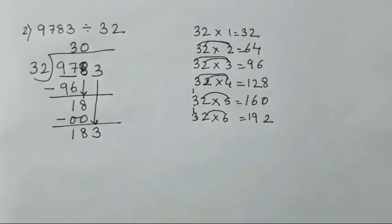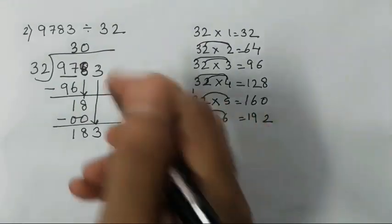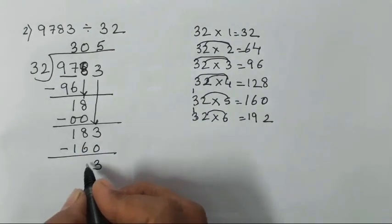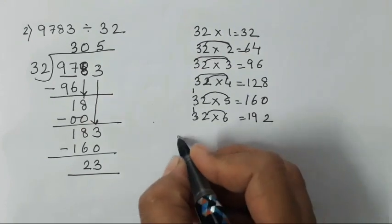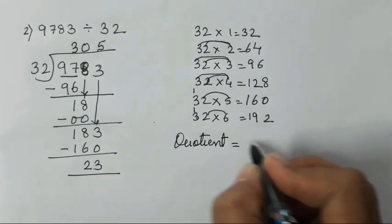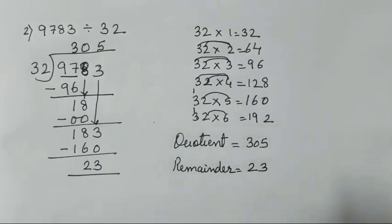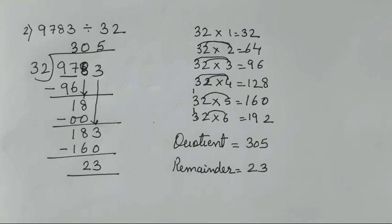18 is not in the 32 table — the smallest value is 32 — so write 0 in the quotient and bring down 3, making 183. The closest table value is 160, which is 32 times 5. Subtract: 183 minus 160 — 3 minus 0 is 3, 8 minus 6 is 2 — giving remainder 23. We don't find a decimal answer here. So the quotient is 305 and the remainder is 23. I hope this division method is clear. If you're still finding anything difficult, let me know in the comments and I'll make a separate video. See you in the next video — take care, bye!